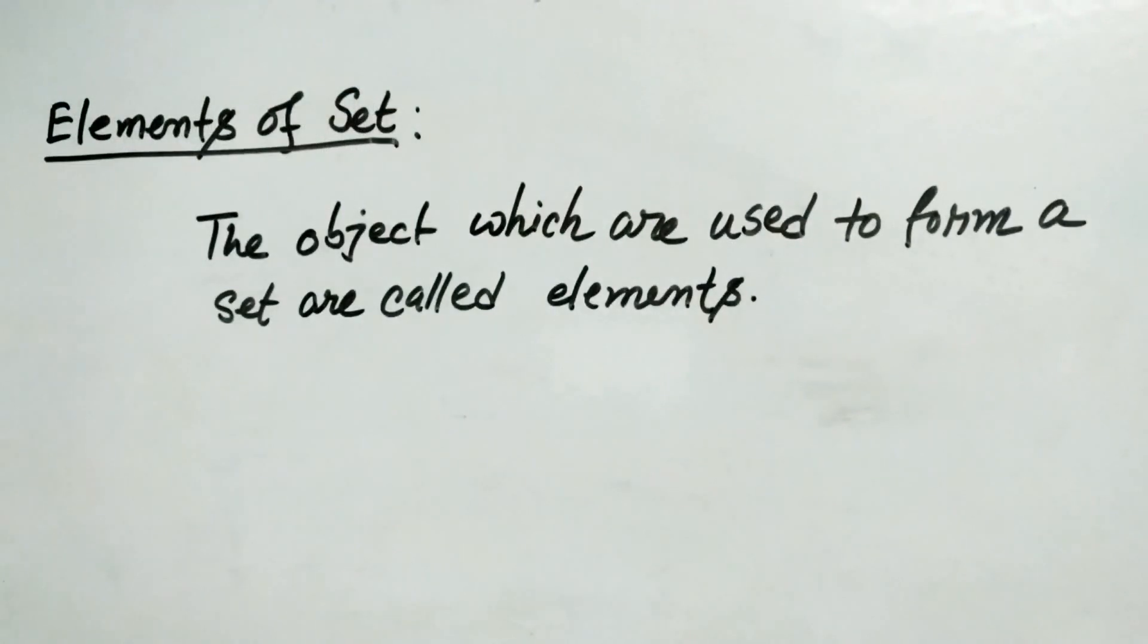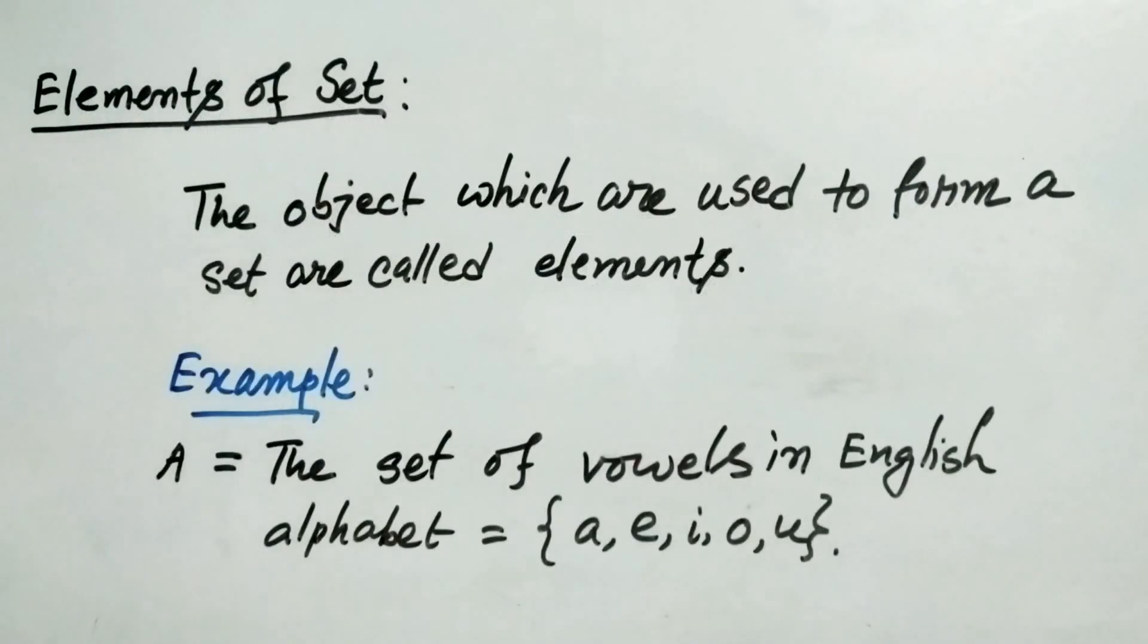So let's talk about the elements of a set. Now the objects which are used to form a set are called elements of a set. So let's go for an example. Let's take a set A which says that the set of vowels in English alphabet. So it is A E I O U. Now this A E I O U they are individually an element of this set A.